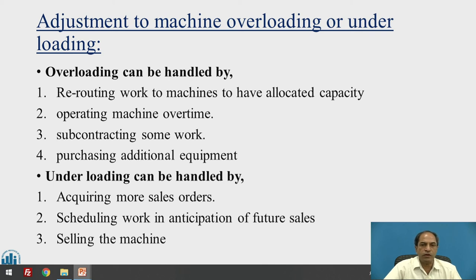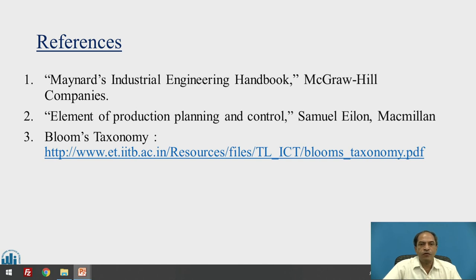In case of under loading, since the cause is low orders, the focus must be on increasing sales to achieve higher loading. If sales cannot be increased immediately, you can forecast and anticipate demand — especially for seasonal or festival seasons — working with the marketing department to schedule and load machines in advance. As a last resort, if capacity remains idle, you may need to sell that machine.